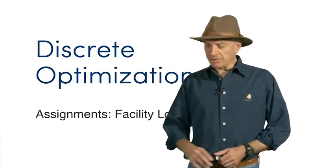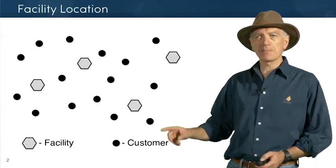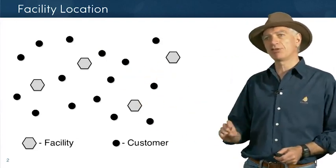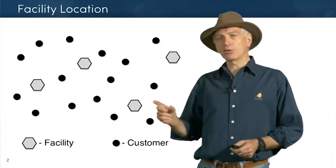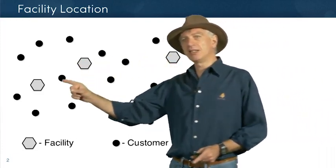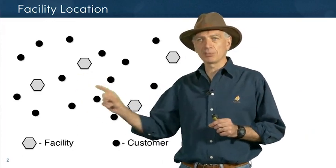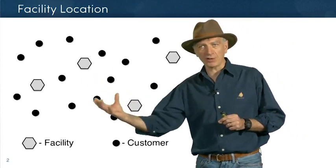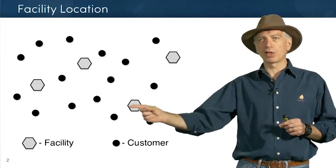This is discrete optimization and the facility location assignment. What you have is a bunch of customers — the black dots you see on the screen — and a set of locations for the facilities. Your goal is to find out where to build these facilities. There are two costs: every time you open a facility it costs a fixed cost, and there is also the cost of delivering goods from that facility to the various customers.